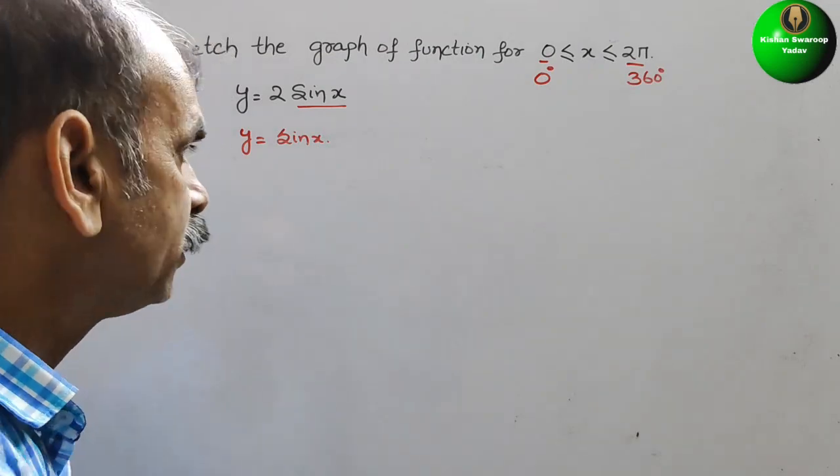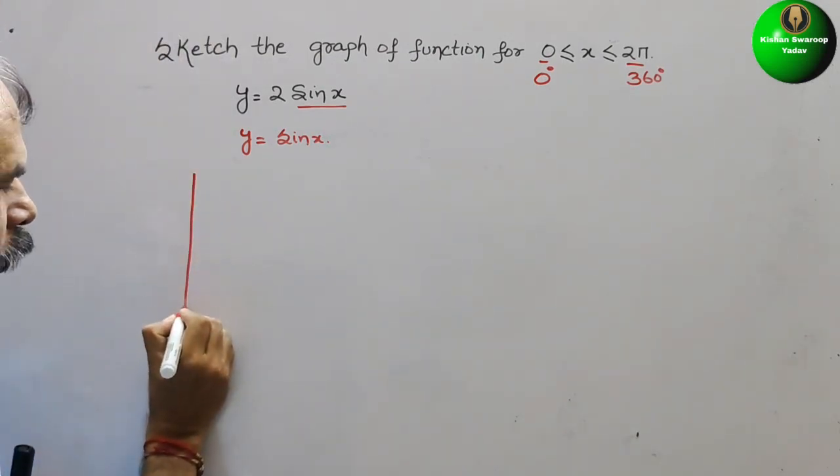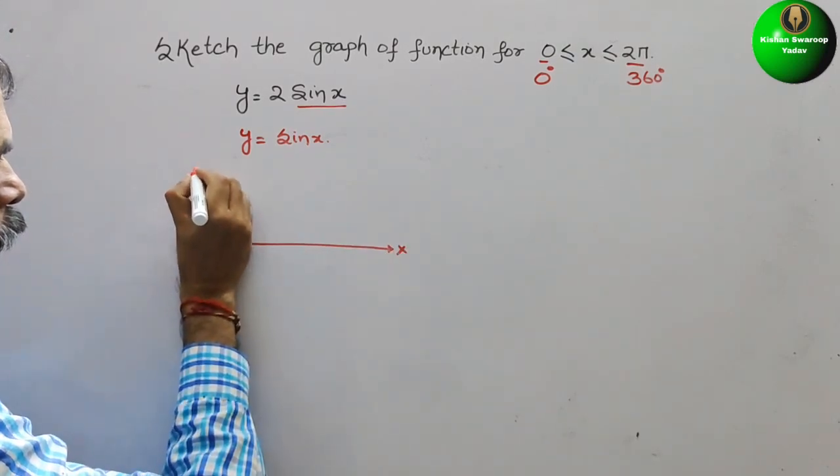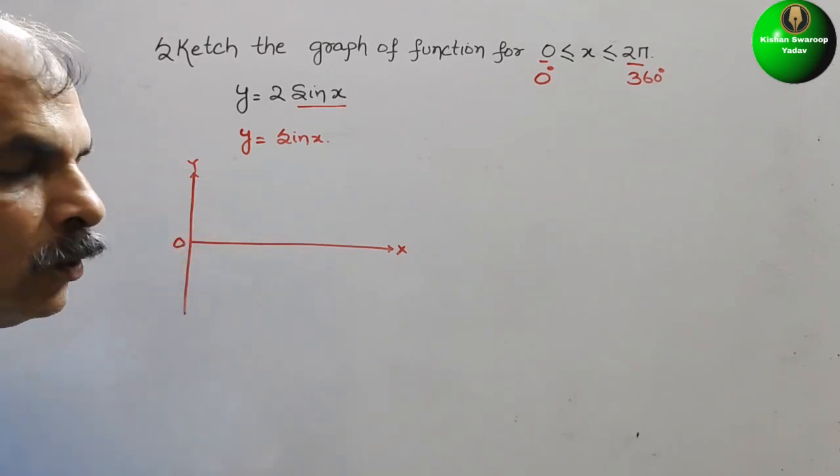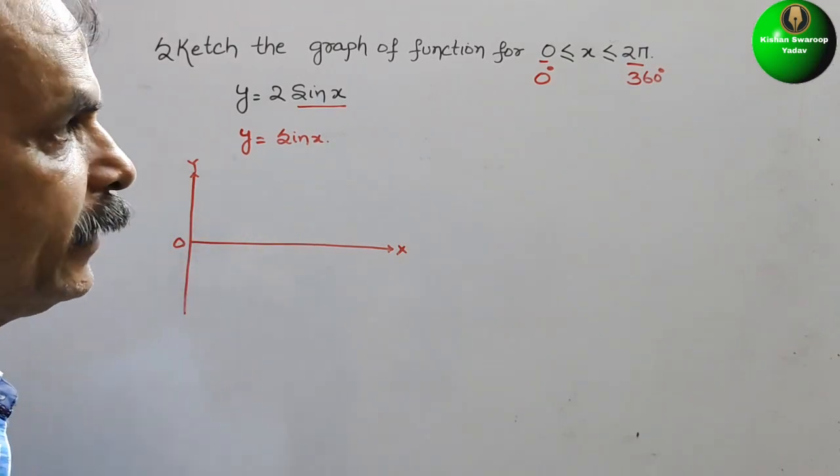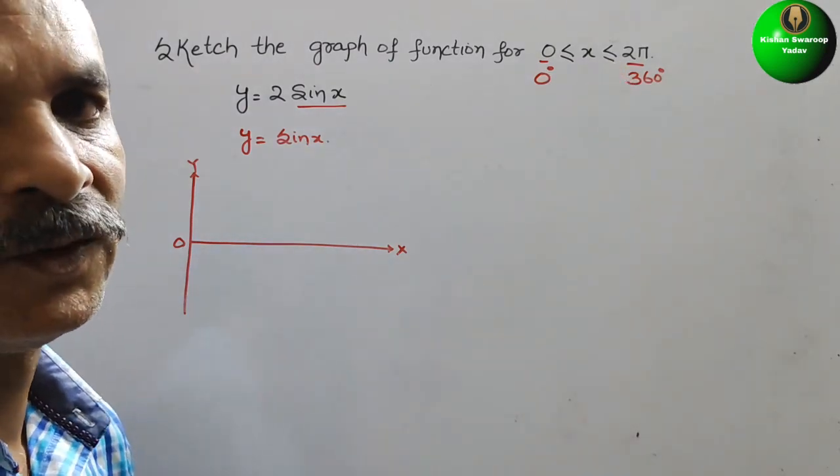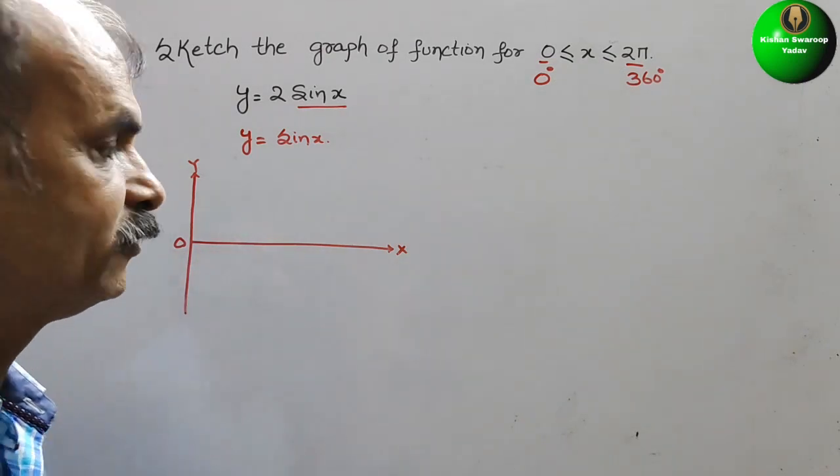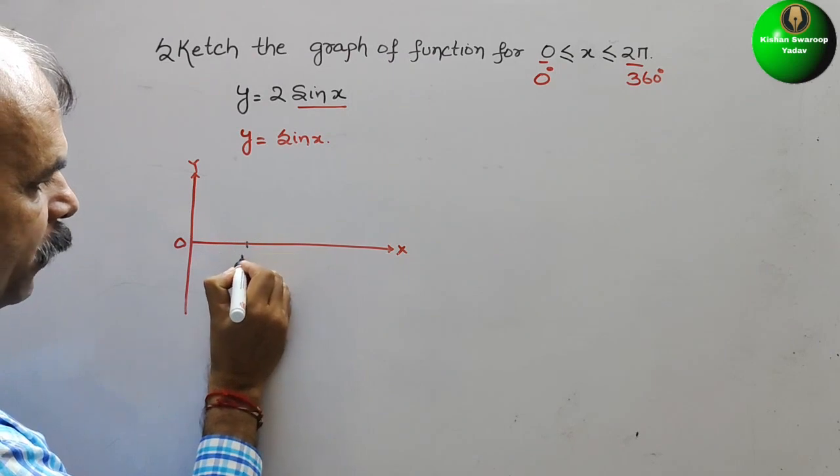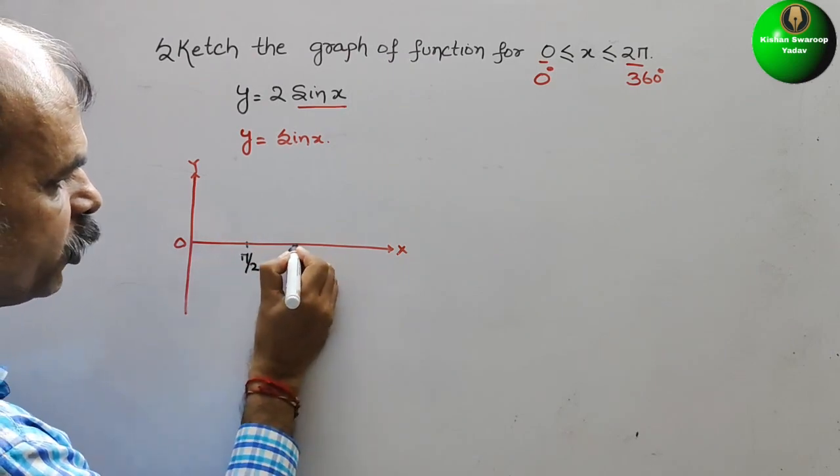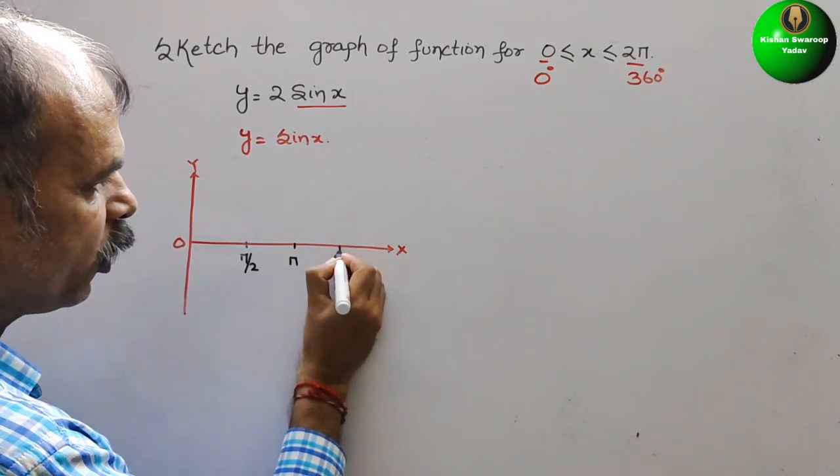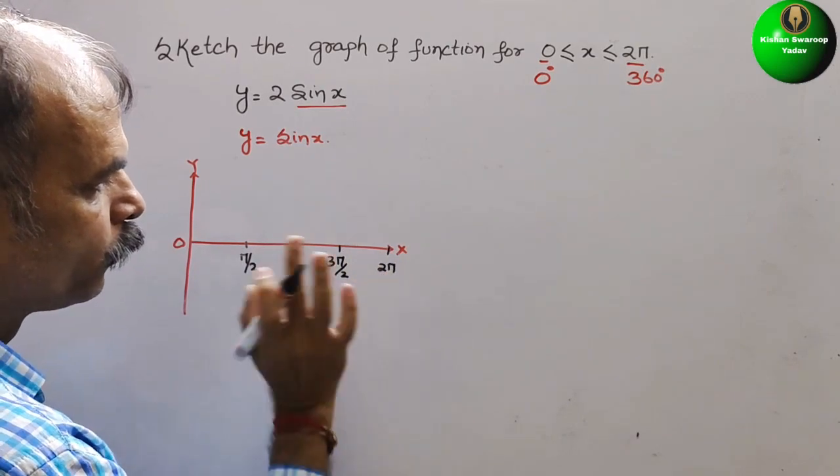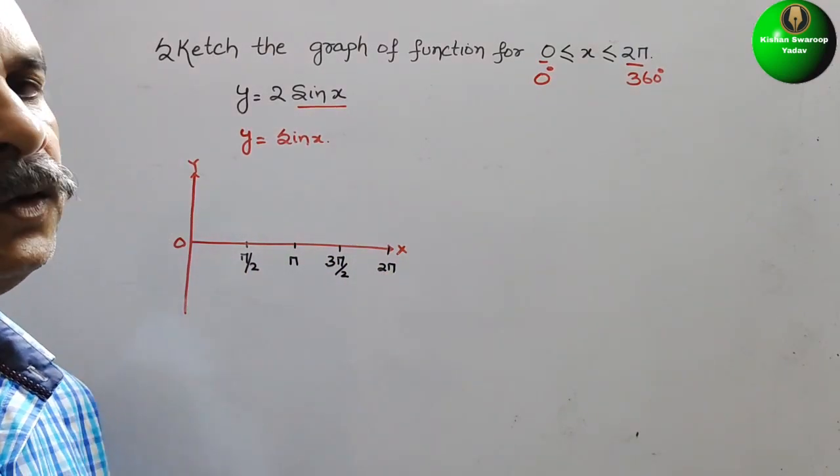How it will be? This is your y and this is your x. And this is your 0. So just make degrees. That is in radians, they have told. So what this is 0, next comes your π by 2, that is 90 degrees. This is your π by 2. Next comes your π. Next comes your 3π by 2. Next comes your 2π. Up to here we have to make it.